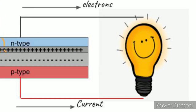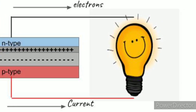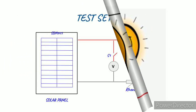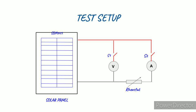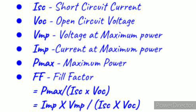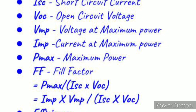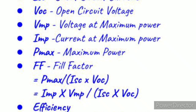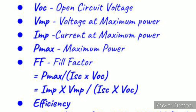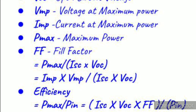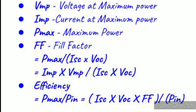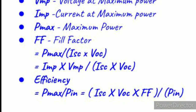I decided to conduct a small experiment with the solar panel we got. The aim is to plot the V-I and power curve of the panel and thus find out its MPP, fill factor and efficiency. The parameters include short circuit current ISC, the open circuit voltage VOC, maximum power point MPP, the ratio of maximum power to the product of ISC and VOC — the fill factor — and finally the efficiency of the panel.